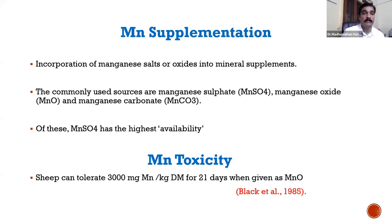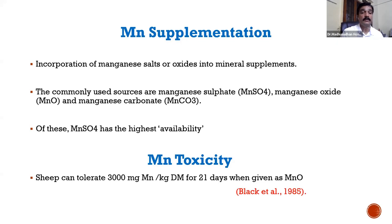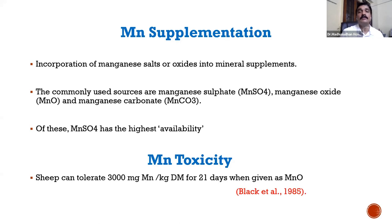For manganese supplementation, the incorporation of manganese salts or oxides into mineral supplements is used. The commonly used sources are manganese sulfate, manganese oxide, and manganese carbonate. Of these, manganese sulfate has the highest availability. Sheep can tolerate up to 3000 mg of manganese per kg dry matter.